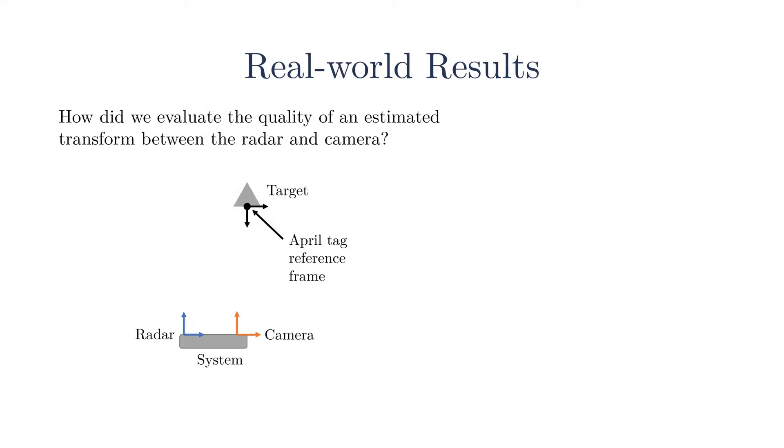We use the reprojection error from the point-based reprojection error method to evaluate the accuracy of our estimated calibration parameters. The reprojection error is evaluated by taking a radar and camera measurement. The camera image is then converted into a measurement of the trihedral reflector using the AprilTag reference frame and the known vector from the AprilTag to the trihedral reflector. Finally, the radar measurement is projected into the camera reference frame using the estimated transform. The reprojection error is then the distance between the camera's measurement of the trihedral reflector and the projected radar measurement.